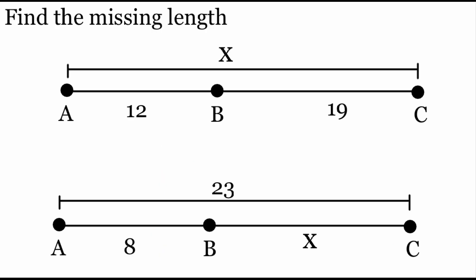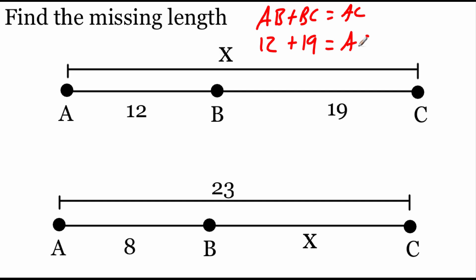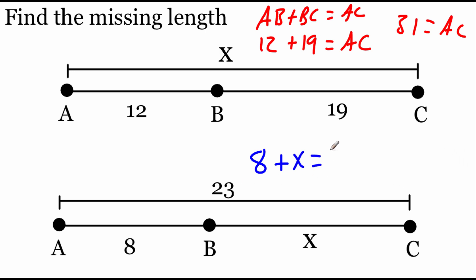Here are two more examples — you can pause the video and run through them, then start it back up once you're finished. In the first one, using the segment addition postulate: AB plus BC equals AC, so 12 plus 19 equals AC. 12 plus 19 gives us 31 as our AC length. In the second example, AB is 8, BC is X, and AC is 23. If we subtract 8 from both sides we get an X value of 15.